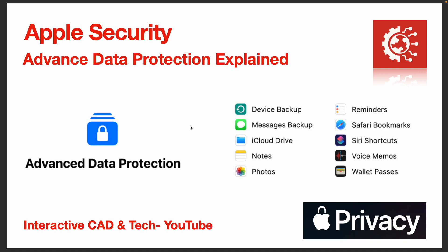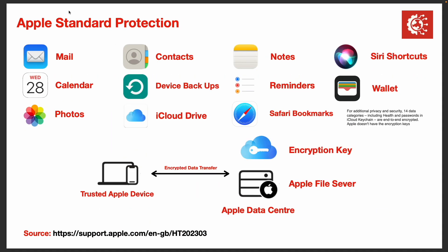First, I'll explain what standard data protection is. Standard data protection is where your mail, contacts, and everything listed here is stored on your trusted device and on an Apple data center in the cloud. It's end-to-end encrypted, so it's encrypted on your device and on the Apple file server. But everything listed here — including your backups, photos, drive, and mail — Apple also separately stores the encryption key for that data.